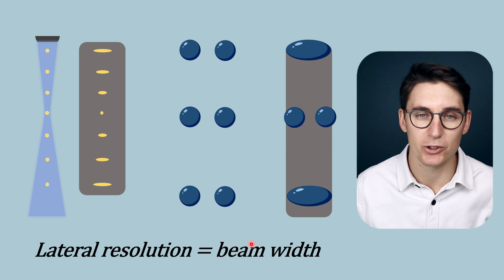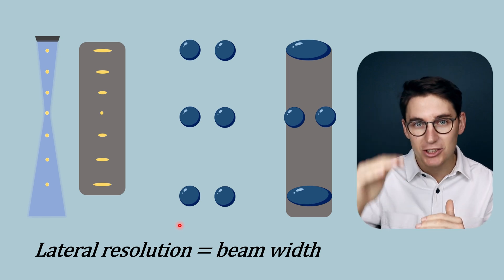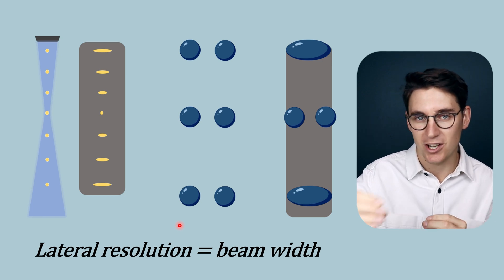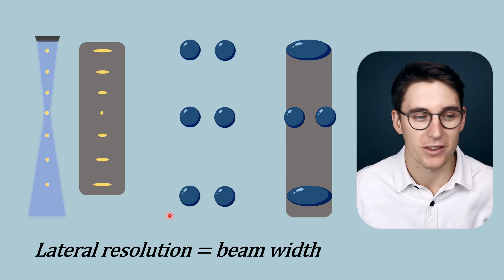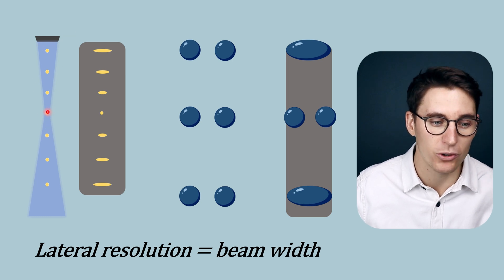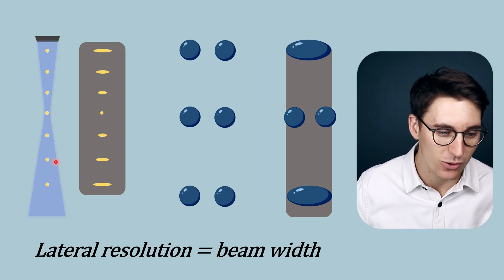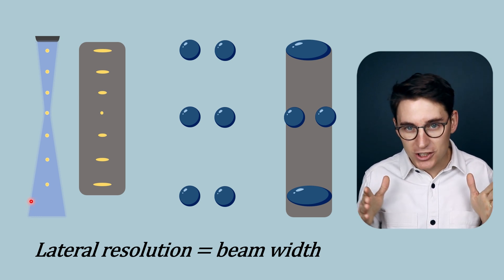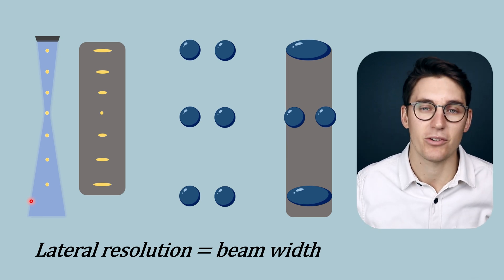Lateral resolution is a function of beam width. Unlike axial resolution — where the frequency and spatial pulse length don't change as the wave heads into tissue — what does change with depth is our beam width. We start with a wide beam width that narrows toward our focal zone at the end of the near field, then diverges again in the far field. So lateral resolution improves as we head toward the focal zone, then gets worse heading into the far zone. Lateral resolution changes with depth.